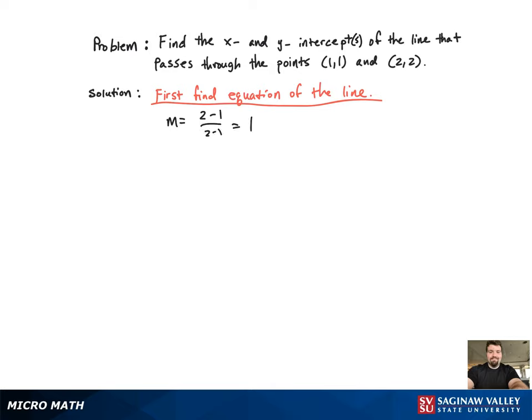So right there we get m equal to 1, that's the slope. Now we're going to come up with the equation of the line. We're going to start with the general equation in slope-intercept form, y equals mx plus b. We're going to plug in m equal to 1, which we just found out. y equals x plus b.